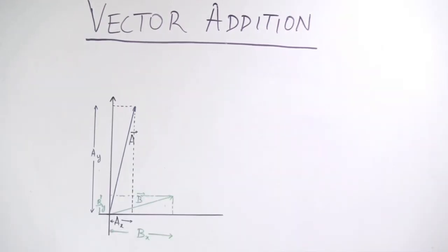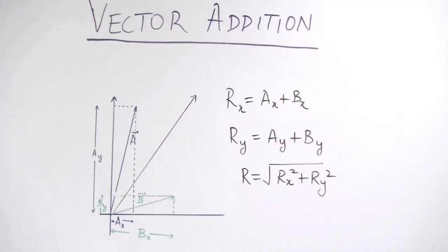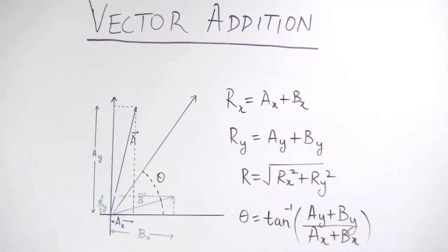To numerically compute the resultant vector, first resolve the two vectors in their x and y directions. To get x and y components of the resultant vector, simply add the x and y components of vector A and B together. You can then easily calculate the magnitude and direction of the resultant vector.